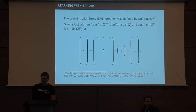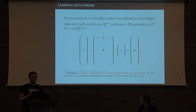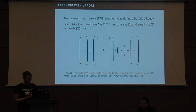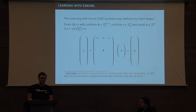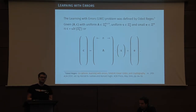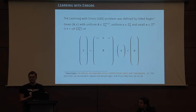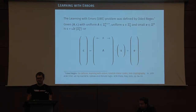Learning with Errors goes back to the work of Oded Regev. What you're given is a tuple (A, C), where A is a matrix m by n mod q, and your job as the adversary is to decide if C is either uniform, or if C was formed as A times s plus e, where e is small. In the old-school formulation s is uniform, but there's a normal form of LWE where you pick s also from the same distribution as the error e, so s can also be thought of as somewhat small.